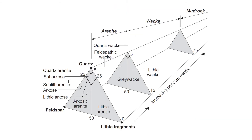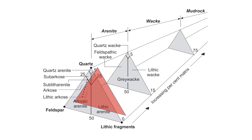The Pettijohn scheme uses three ternary diagrams representing a continuum of sandstones — going from clast-supported sandstones on one end of the spectrum to matrix-supported sandstones on the other end. In this framework, we can use the Toblerone plot to differentiate between sandstones of various compositions, textures, and fabrics.